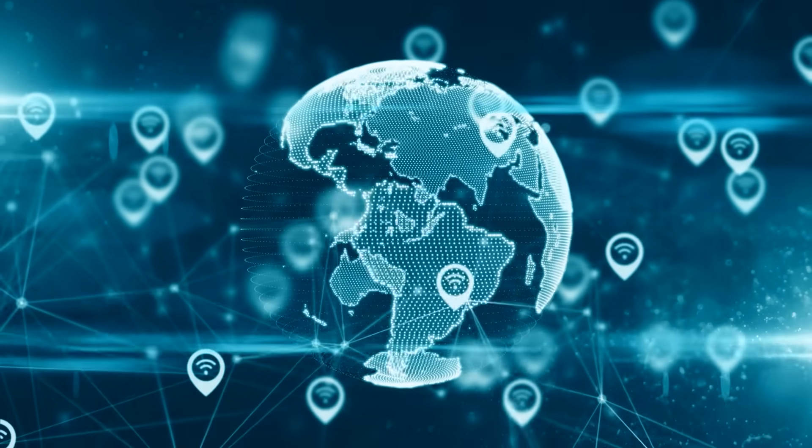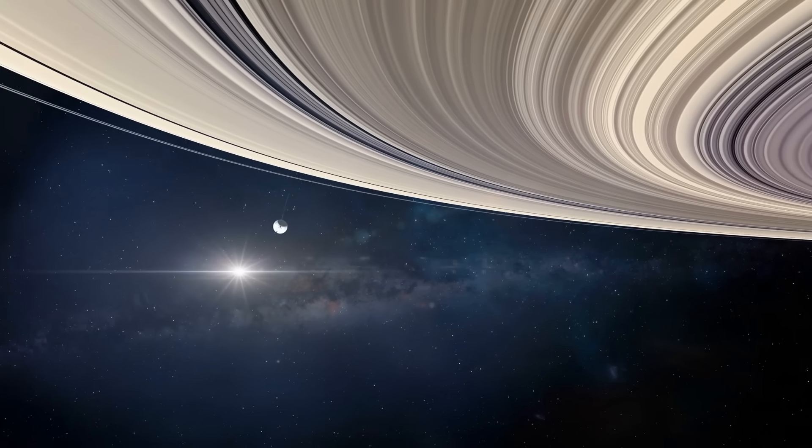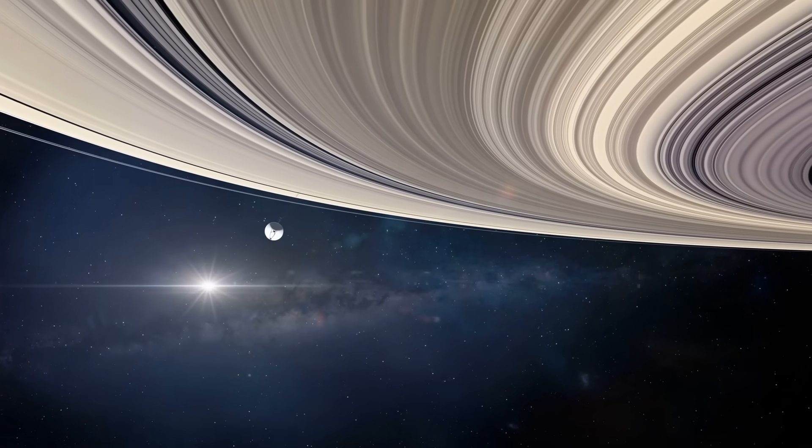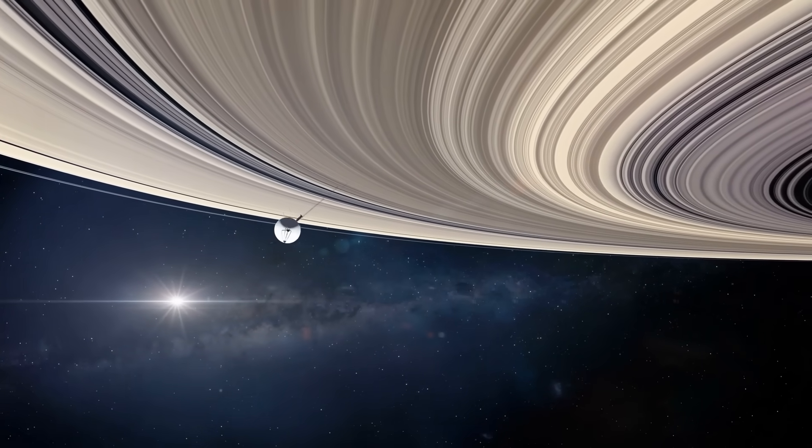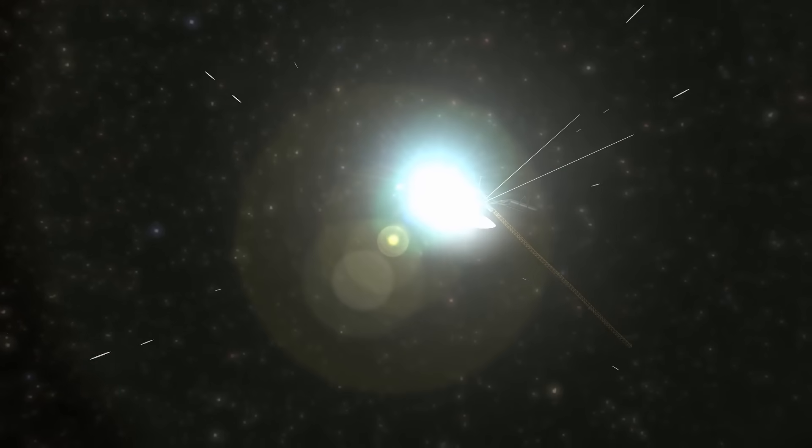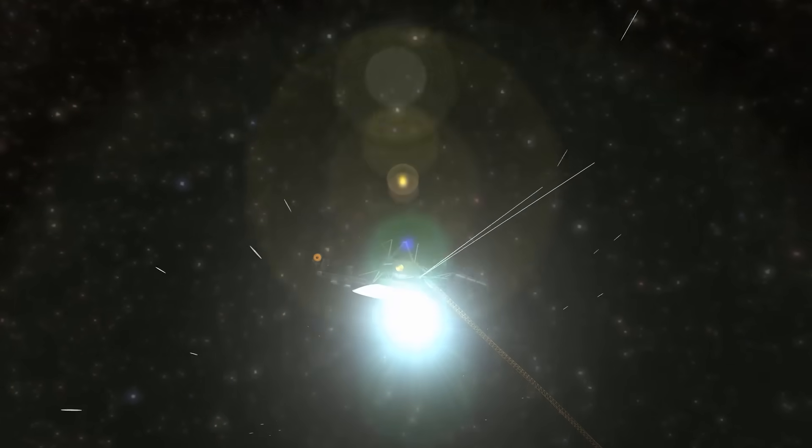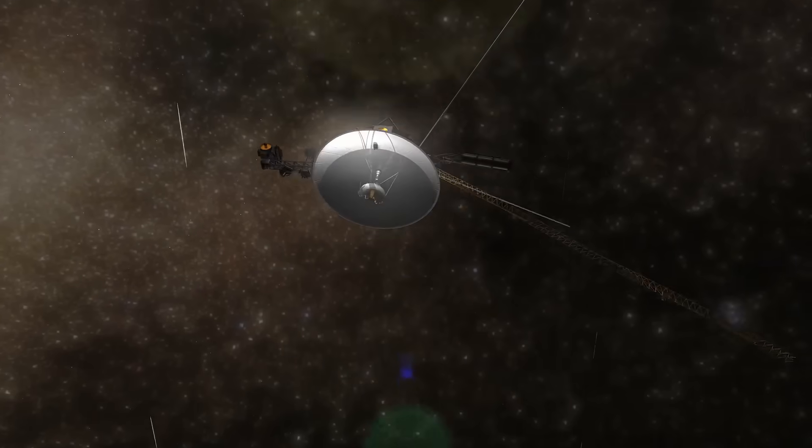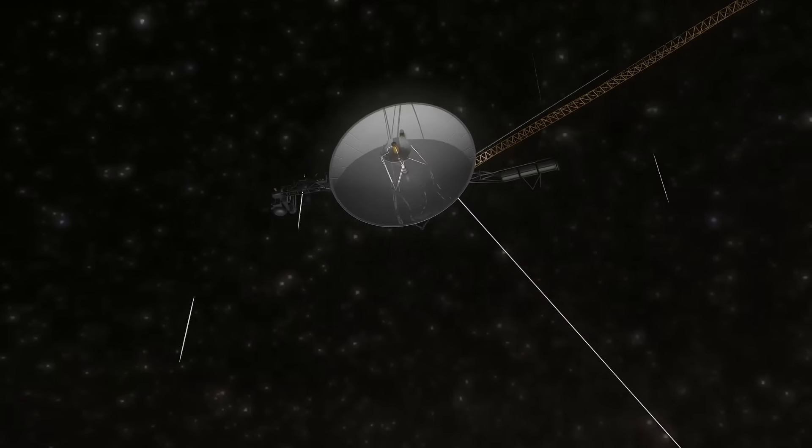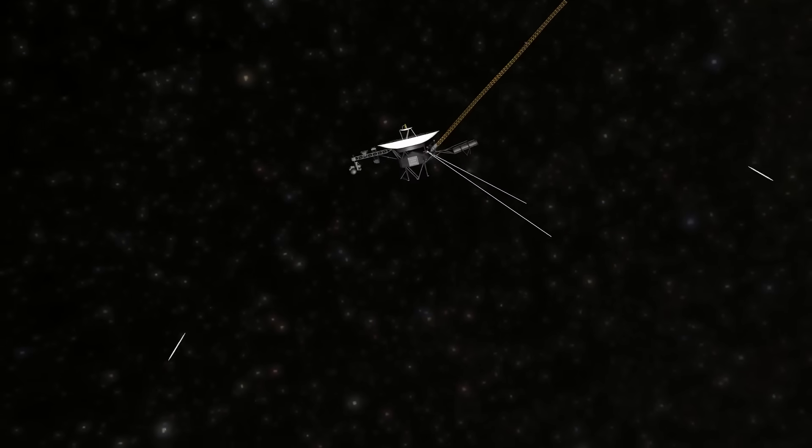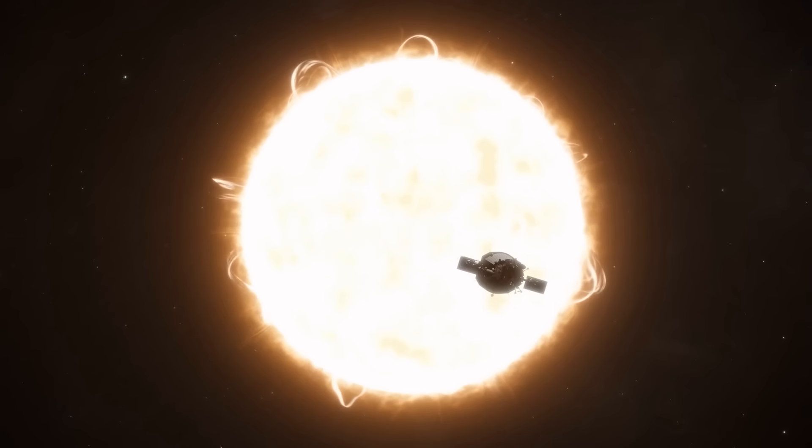Once the issue was fixed, Voyager 1 was able to continue flying through the interstellar medium without any problems. Until at least 2025, the Voyagers have adequate fuel and electricity to run their primary scientific instruments. Voyager 1 will be roughly 22.1 billion kilometers away from the sun at that point.